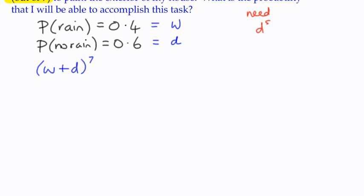I need D to the power of 5 or I need D to the power of 6 or I need D to the power of 7 because it would be absolutely fine to have 6 dry days or 7 dry days. We only need 5, but we have to, in this case, consider the fact that 5 is the minimum.